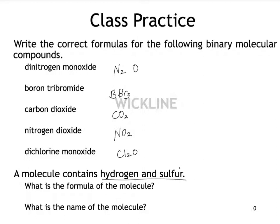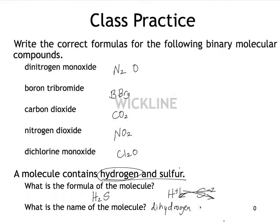Here's a trickier case: a molecule containing hydrogen and sulfur. We need their charges and need to know which is positive and which is negative. Looking up electronegativities, hydrogen is lowest, so it's written first and is positive — H+1. Sulfur is negative 2 in nearly every case. Cross the charges: the 2 from sulfur becomes the subscript for hydrogen, and the 1 from hydrogen becomes the subscript for sulfur (not written). So the formula is H2S, and the name is dihydrogen monosulfide.